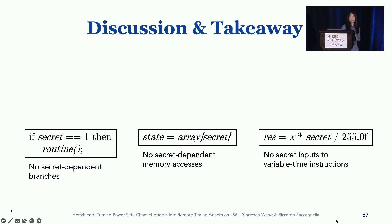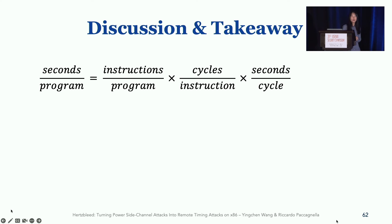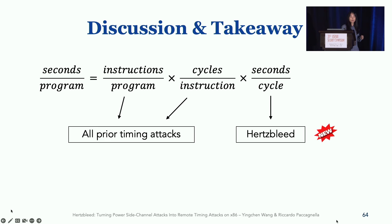Timing attack has been here for 25 years. During these 25 years, we developed what is called constant time programming. However, Hertzbleed shows that the current practices for how to write constant time programming code are no longer sufficient to achieve real constant time execution. Because Hertzbleed can turn power leakage into timing leakage. Here's another way to think about it. There are three factors influences the runtime of a certain program. Instructions per program, cycles per instruction, and seconds per cycle. Note, the third one is also the inverse of frequency. All the previous timing attacks focus on to exploiting the first two factors. That's why the current constant time programming principles take care of the first two factors. Hertzbleed exploit the third one. Hertzbleed motivates us to rethink how to write constant time programming code to achieve real constant time programming.